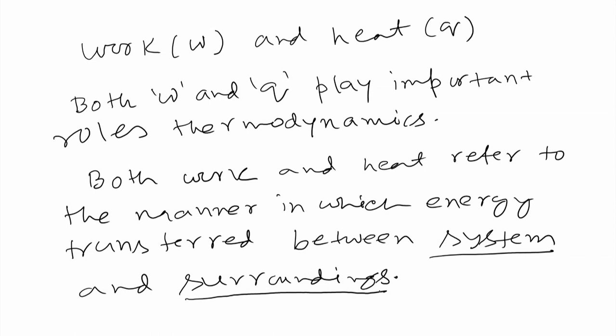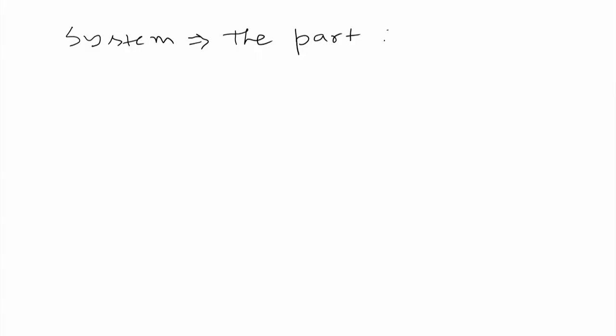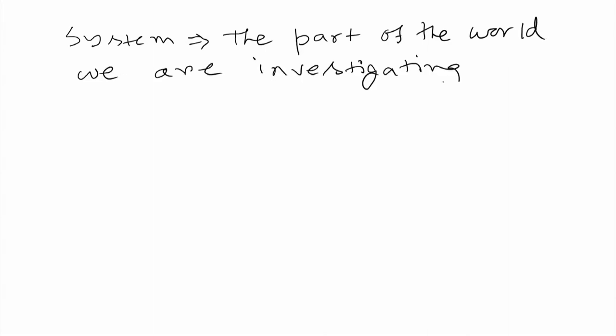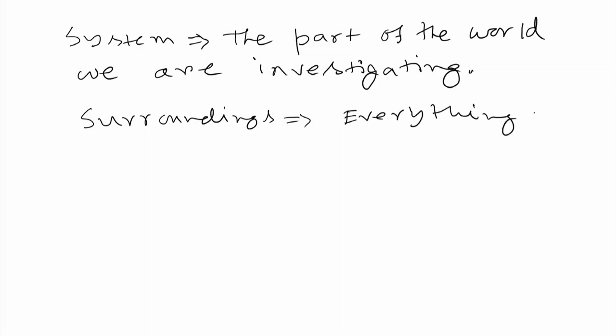We have introduced two key terms: system and surroundings. System is defined as the part of the world we are investigating. Surroundings can be defined as everything else other than the system.